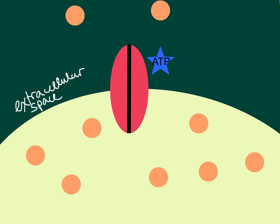Let's pretend that this yellowish cell here is trying to take in sugar molecules. All of these little peachy colored dots are sugar molecules. Cells need sugar — they provide a good source of energy. So this cell is trying to take in sugar molecules from the extracellular environment. We can see a couple sugar molecules outside and lots of sugar molecules inside the cell. The problem is these sugar molecules will not diffuse into the cell because we have a very high concentration inside and a low concentration outside in the extracellular space.